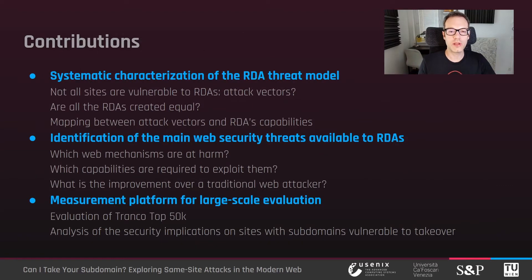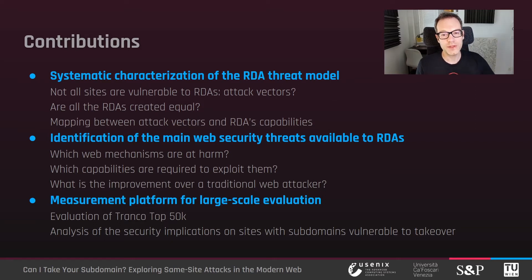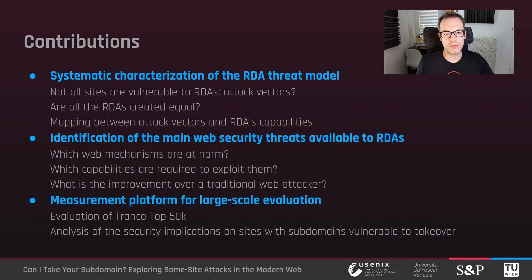Our work brings three main contributions. First, we introduced a fine-grained definition of a related domain attacker that captures the capabilities granted to different attack vectors, and we systematically characterized the attack vectors in terms of the capabilities they provide. Then, we identified the web mechanisms that can be abused by related domain attackers and investigated the capabilities required to carry out the attacks. Finally, we performed a large-scale evaluation of the threats on the top 50,000 websites.